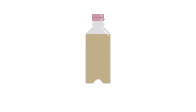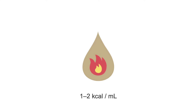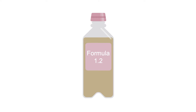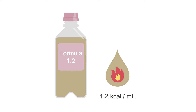When selecting a tube feeding formula, you'll want to pick your calorie density. This refers to how many calories each milliliter of formula provides, and ranges from 1 to 2 calories per ml, meaning a liter can provide between 1,000 to 2,000 calories. Many tube feeding formulas will even have their calorie density included in the name — so if you see 1.2 in the name, you know it provides 1.2 calories per ml of formula.